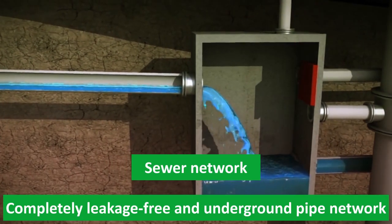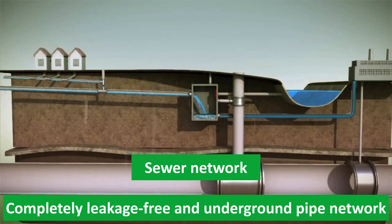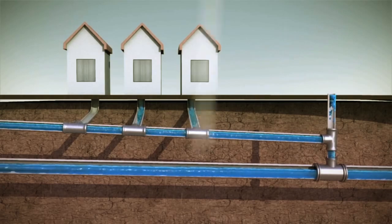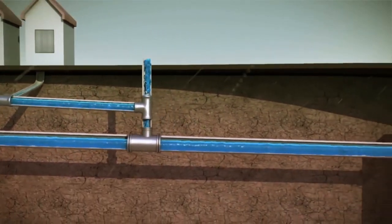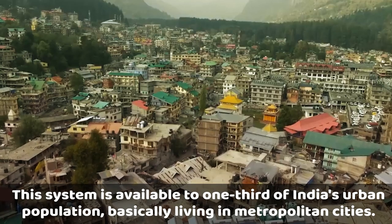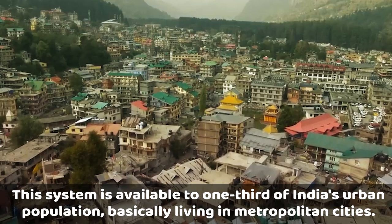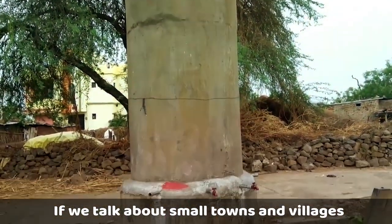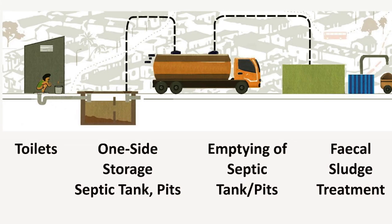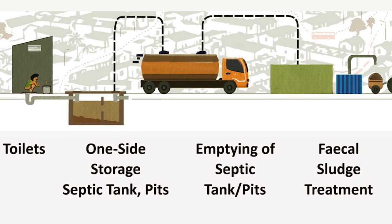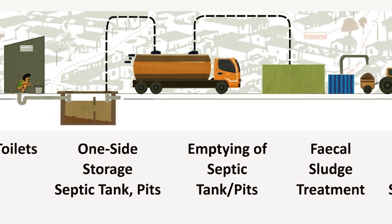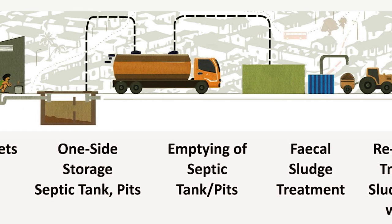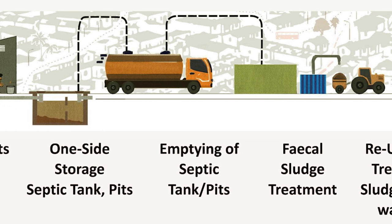An ideal system consists of a completely leak-free and underground network of pipes, which we call a sewer network, as well as a sewage treatment plant. This system is available to one-third of India's urban population, basically living in metropolitan cities. If we talk about small towns and villages, most people use a separate sewerage system, also called an on-site system, which consists of a septic tank or pit latrines. This system is prevalent in many Indian homes.